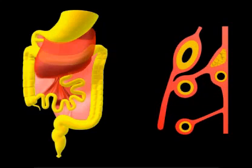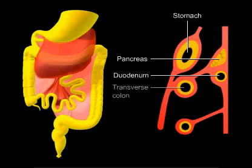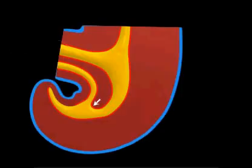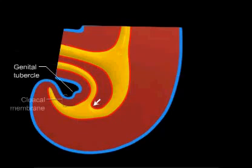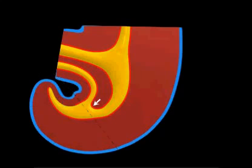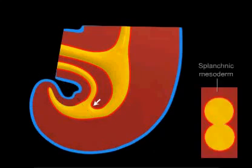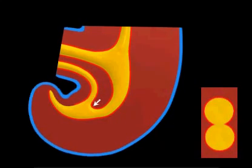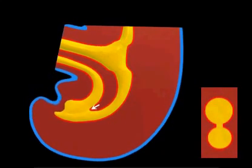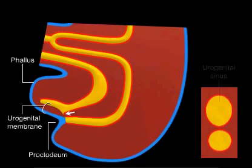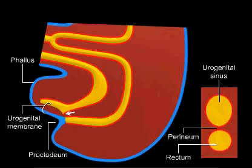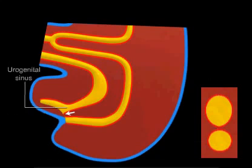The hindgut gives rise to the distal third of the transverse colon through to the upper two-thirds of the anal canal. By the seventh week of gestation, the urorectal septum — a layer of mesoderm — grows between the allantois and the hindgut. It divides the cloaca into the urogenital sinus and the anorectal canal, while its tip forms the future perineal body. The urogenital sinus forms the future bladder, parts of the urethra, and the phallus, whereas the anorectal canal develops into the rectum and most of the anal canal.